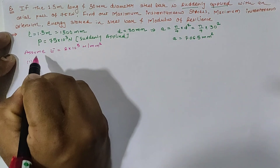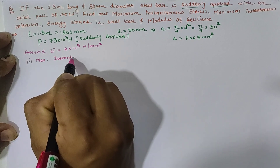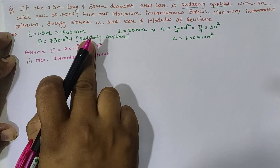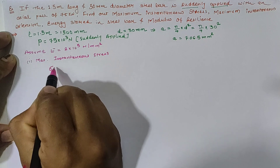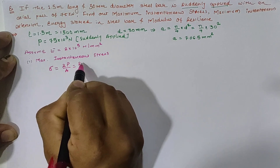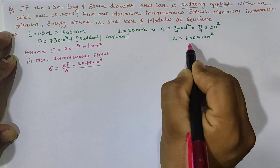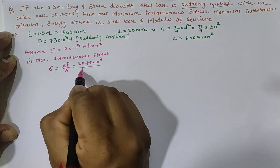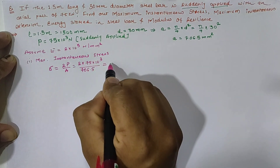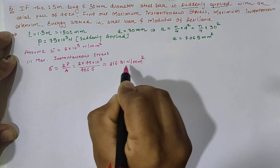First, we calculate the maximum instantaneous stress for a suddenly applied load. It is given by sigma equals twice the force divided by area. Force is 75 into 10 raised to 3 newtons and area is 706.5 mm square. Hence our maximum instantaneous stress is equal to 212.31 newton per mm square.